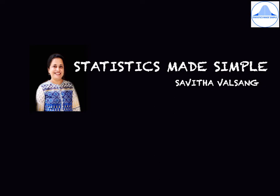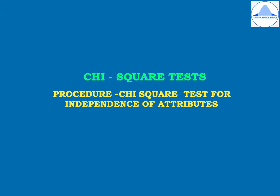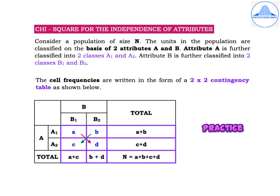Welcome back to Statistics Made Simple, I am Savita Valsang. In this video we learn the third test under chi-squared test, which is the chi-squared test for independence of attributes. I will now explain the procedure for the chi-squared test for independence of attributes.